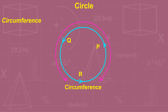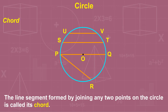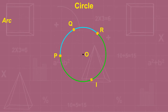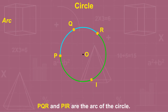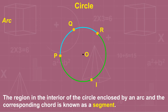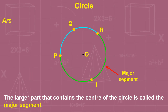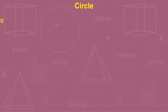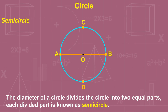The length of the boundary of a circle is its circumference. The line segment formed by joining any two points on the circle is called a chord. An arc is a part of the circle between any two points. In the given figure, PQR and PIR are arcs of the circle. The region in the interior of the circle enclosed by an arc and the corresponding chord is known as a segment. The larger part containing the center is the major segment, and the smaller part not containing the center is the minor segment. The diameter divides the circle into two equal parts, each known as a semicircle.